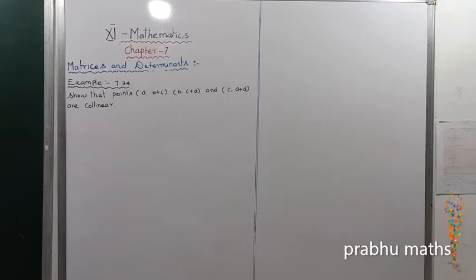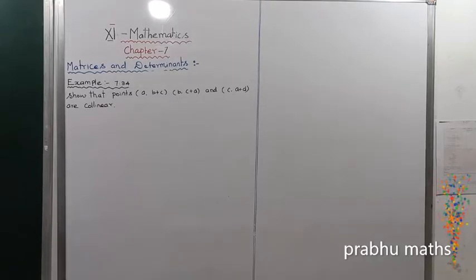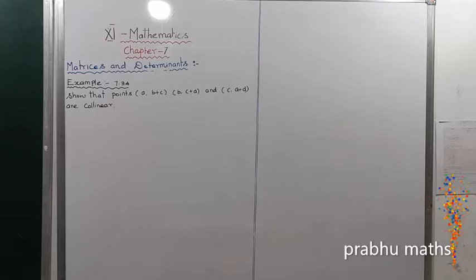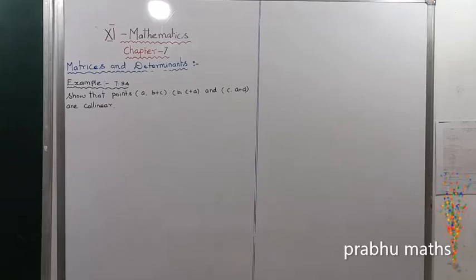Example 7.34: Show that the points A, B+C; B, C+A; and C, A+B are collinear.